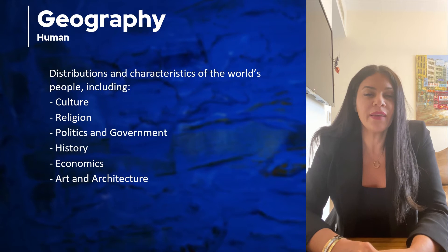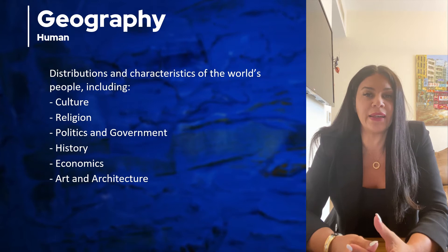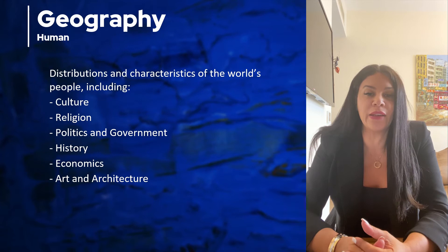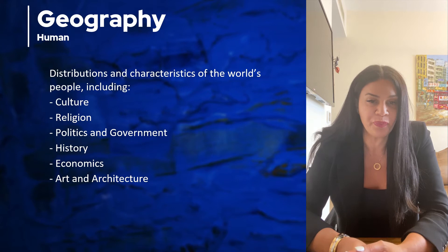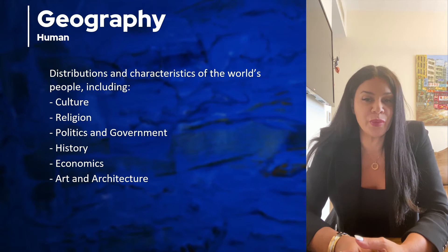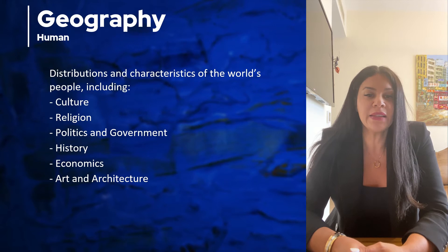What is really powerful in geography is when geographers look at the interaction between both physical characteristics and human characteristics. For example, geographers look at how rivers, mountains, and deserts impact where people live, how they have learned their languages, what type of government they have, and even the culture and customs they have. This is where we're going to spend a lot of time in these lessons.